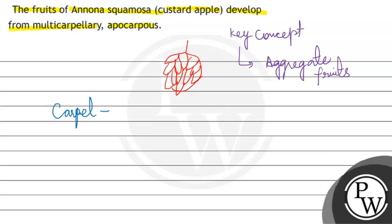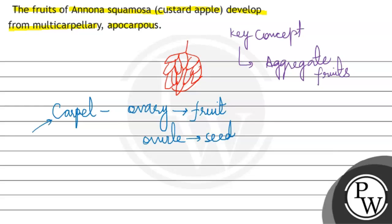The carpel is present in the ovary, and inside the ovary we find the ovule. The ovule becomes the seed, and this ovule-derived structure is called the fruit. In a simple fruit, only one carpel is involved, one ovule is involved, and that one ovule develops into a fruit — this is a simple fruit.